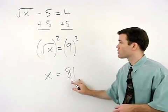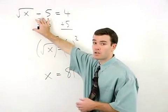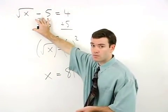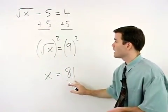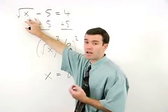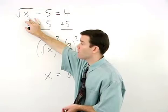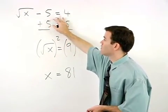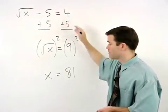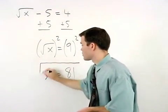Finally, check your answer back in the original equation to make sure that it works. If we plug in 81 back in for x, we have the square root of 81, which is 9, minus 5 equals 4. So our answer checks.